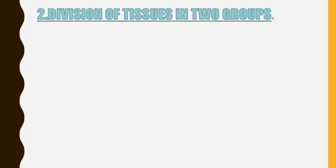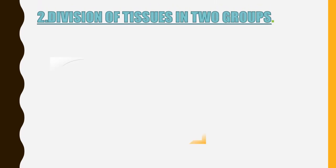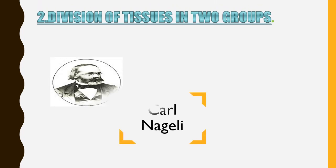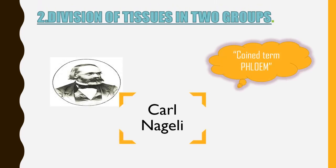Here is the legend who divided tissues into two groups — the honorable scientist Carl Nageli. Here is a fact: he also coined the term phloem.